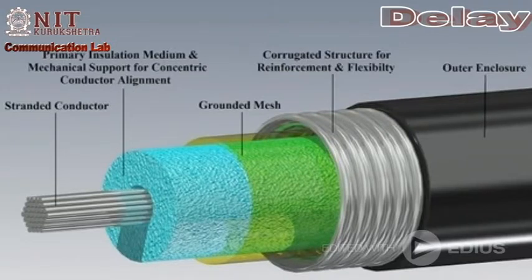A transmission line is a parallel wire line — two parallel wires separated by insulators. This insulator may not be perfect, so there is leakage from one line to another. And since two lines are separated by an insulator, there exists a capacitor between them.